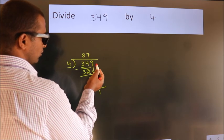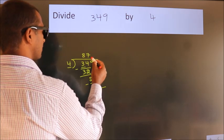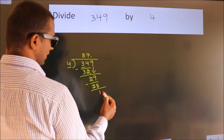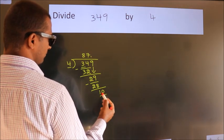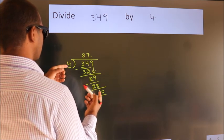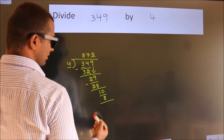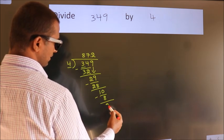After this, there are no more numbers to bring down, so we put a dot and take 0, giving us 10. A number close to 10 in the 4 table is 4 times 2 equals 8. Now we subtract and get 2.